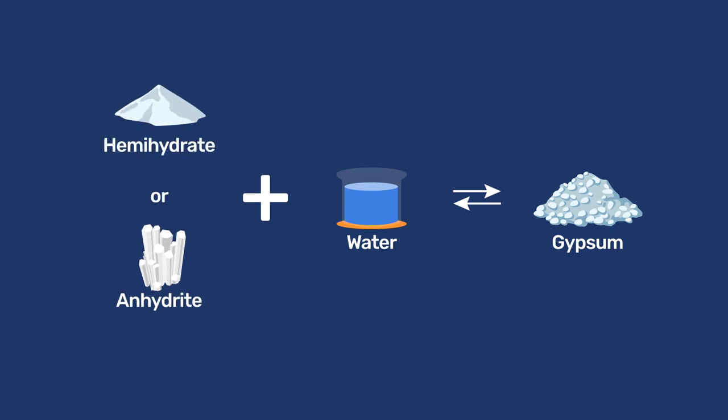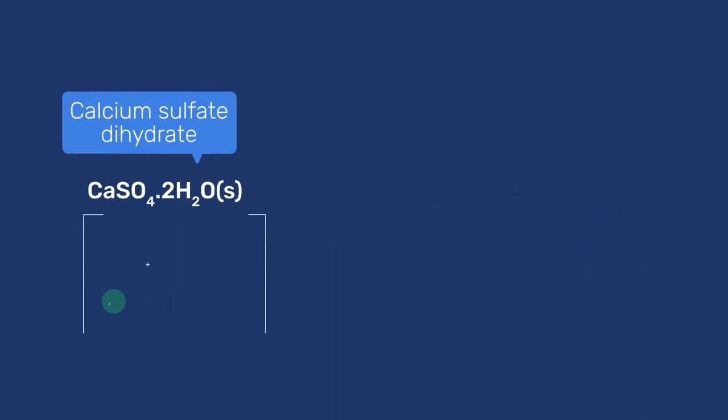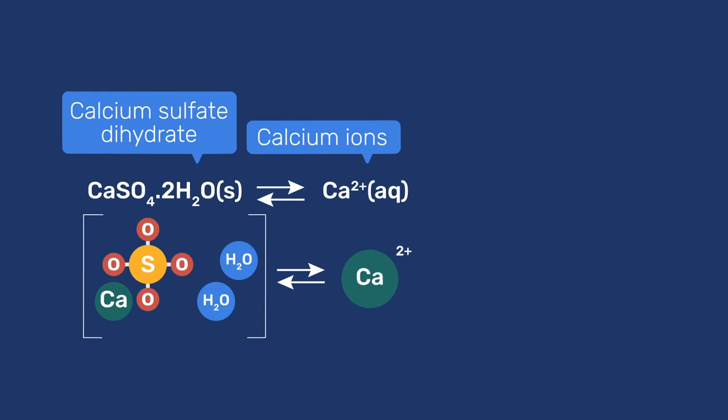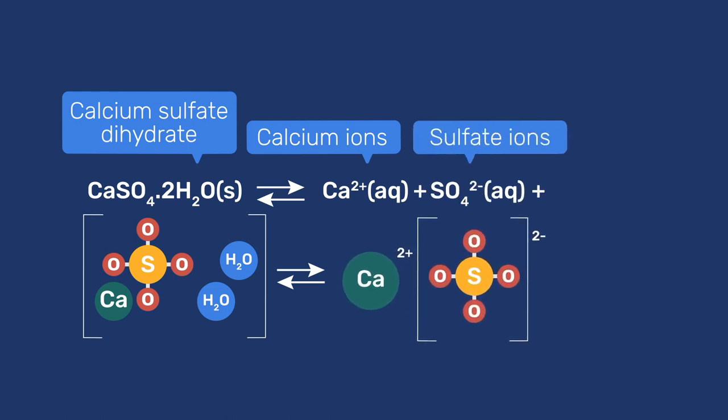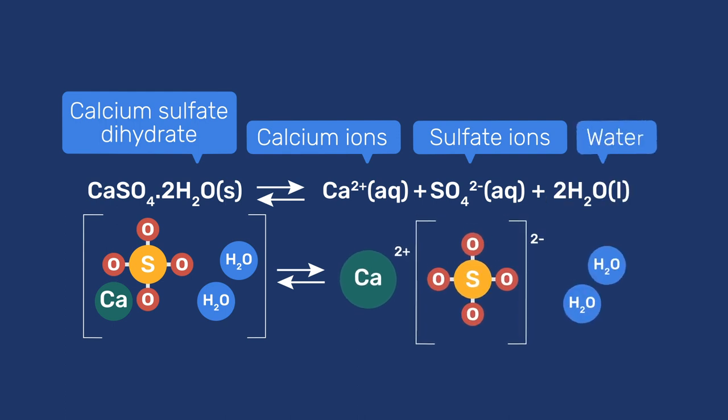Gypsum is a calcium sulphate dihydrate. It is partially soluble, with each mole dissolved releasing 1 mole of calcium 2 plus ions, 1 mole of sulphate 2 minus ions, and 2 moles of water.